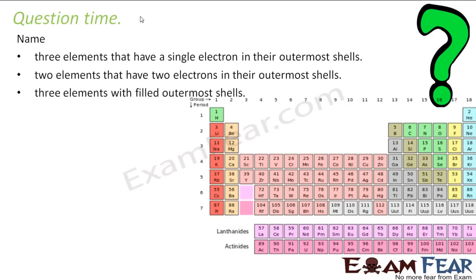Name three elements which have single electron in the outermost shell. Single electron is this. All these will have single electron. So I can take any of these elements. Lithium, sodium, potassium. So I can write here lithium, sodium, potassium. All these elements will have single element in the outermost shell.